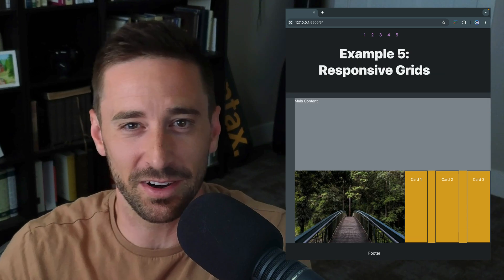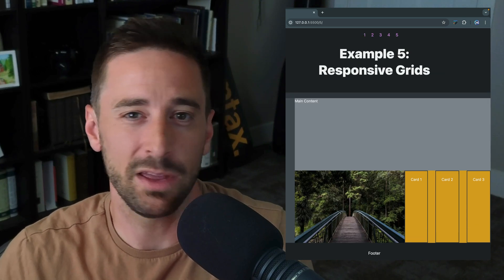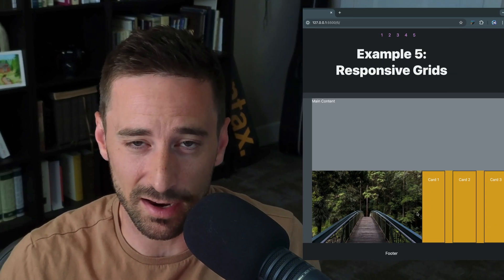Especially if you are a master at using Flexbox, it can be really hard to envision when you might reach for grid. So I wanted to give some examples of when I reach for grid — from a very simple example of centering something inside of a div, all the way to the very end where you have a much more complex and responsive design. Let's jump in.